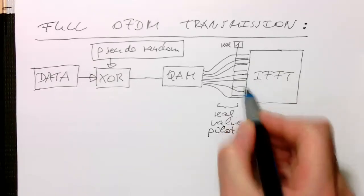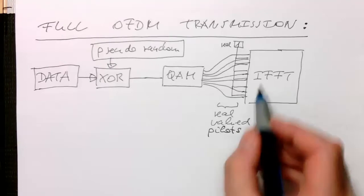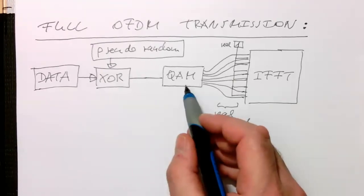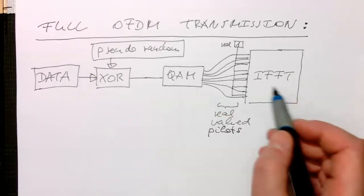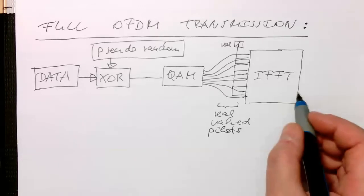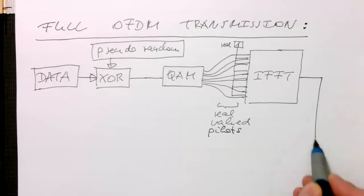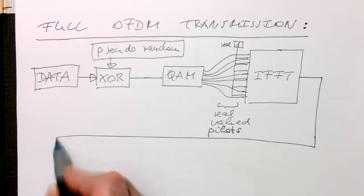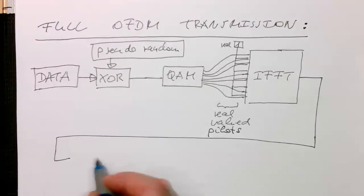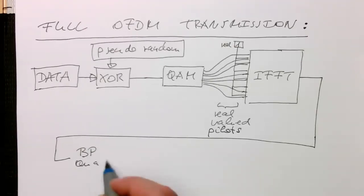They are interleaved with the actual payload data coming from our QAM coder. After that, the output goes into our bandpass quadrature modulator.